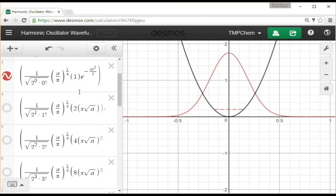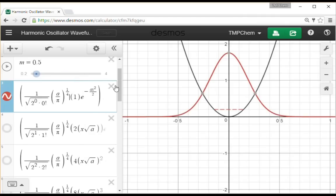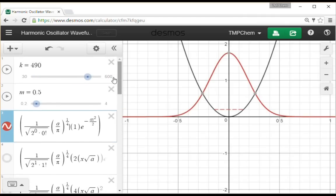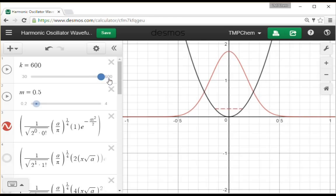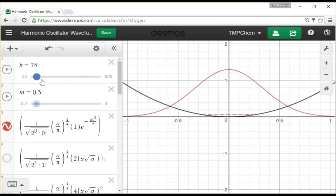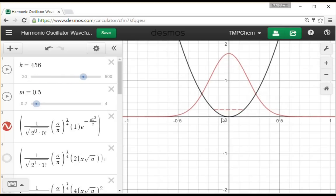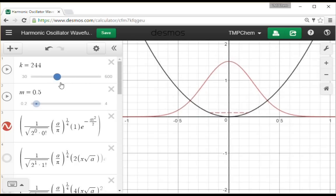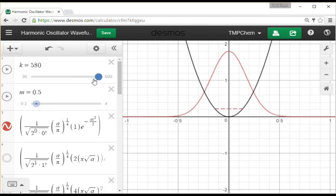So here's psi 0. It's a Gaussian function that I have in terms of the Hermite polynomials, the Gaussian normalization constant. So as I change my spring constant, notice the potential can get tighter, and my Gaussian gets tighter. As the potential gets more spread out, as k gets lower, my Gaussian spreads out. I have the energy levels in there as well. So this is the first solution, so psi 0.